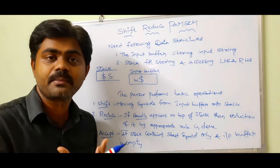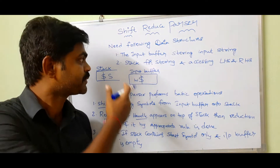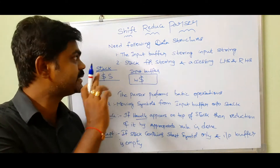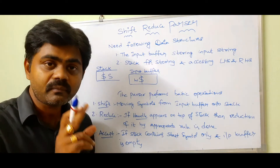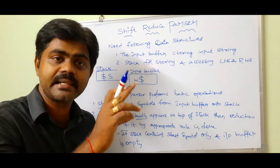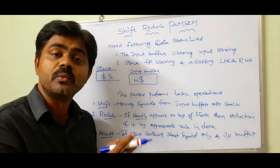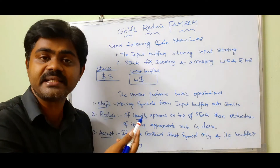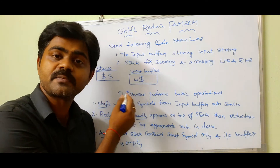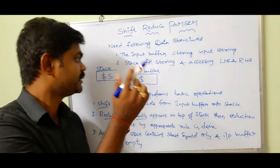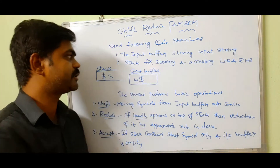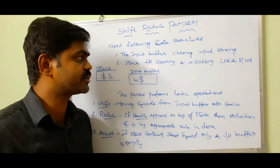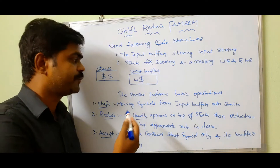The stack is last-in first-out. The stack is used for storing and accessing the LHS and RHS of production rules. The key difference between the stack and the input buffer is that in the stack we place the dollar symbol at the front, while in the input buffer the dollar symbol is placed at the extreme right.